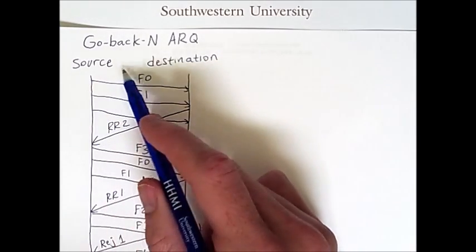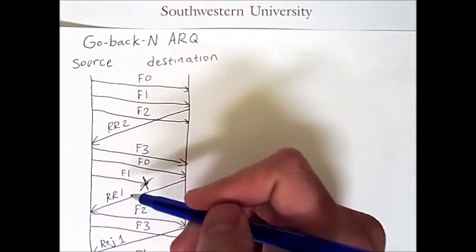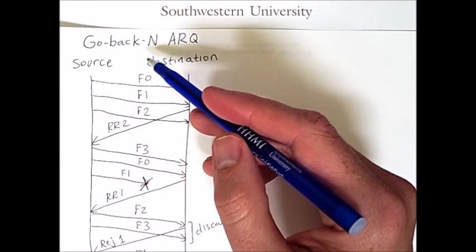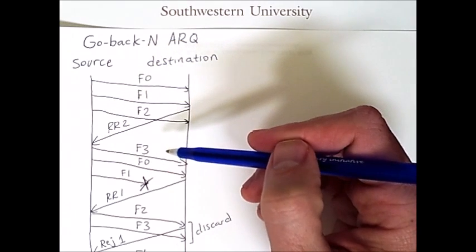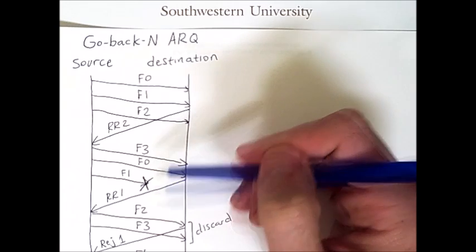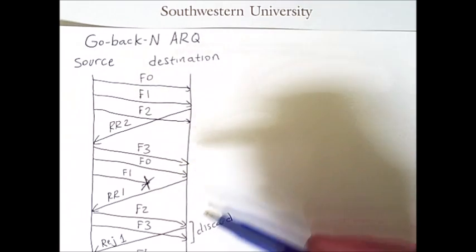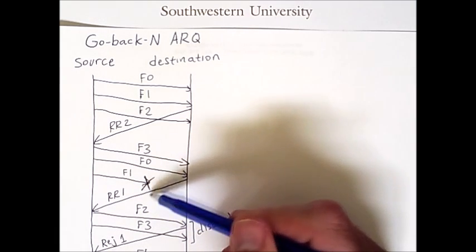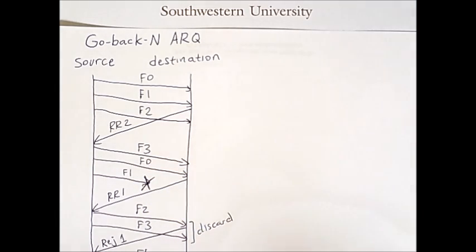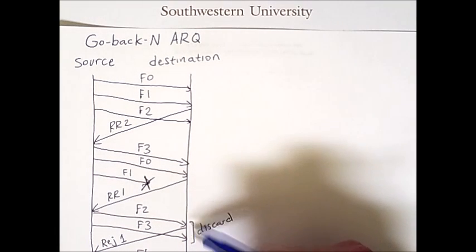So, in summary, go-back-N ARQ may have to repeat up to N frames, where N is the window size on both the source and the destination. So if there's some sort of problem, it may have to resend all of those frames, despite the fact that some frames may have been successfully received after the point where one frame was lost. The reason for this scheme is that it is simple to implement, and it does still take advantage of sliding window flow control, but it is a bit wasteful to discard these packets that were successfully received.